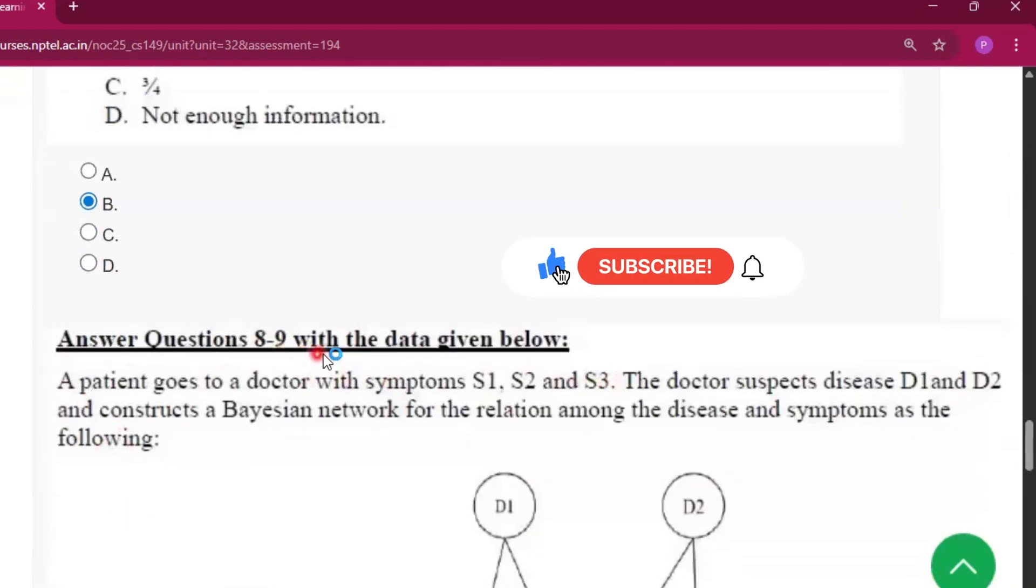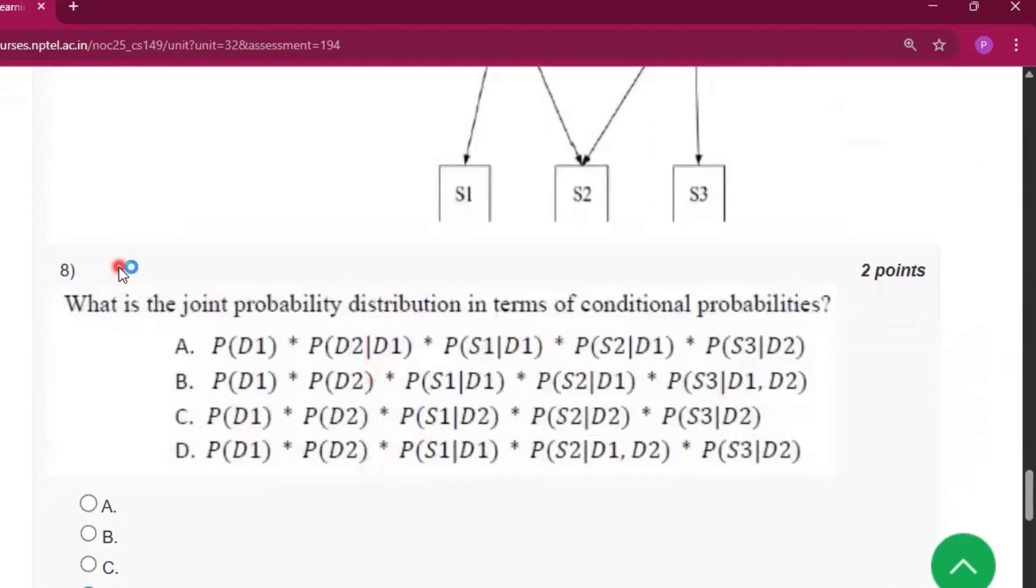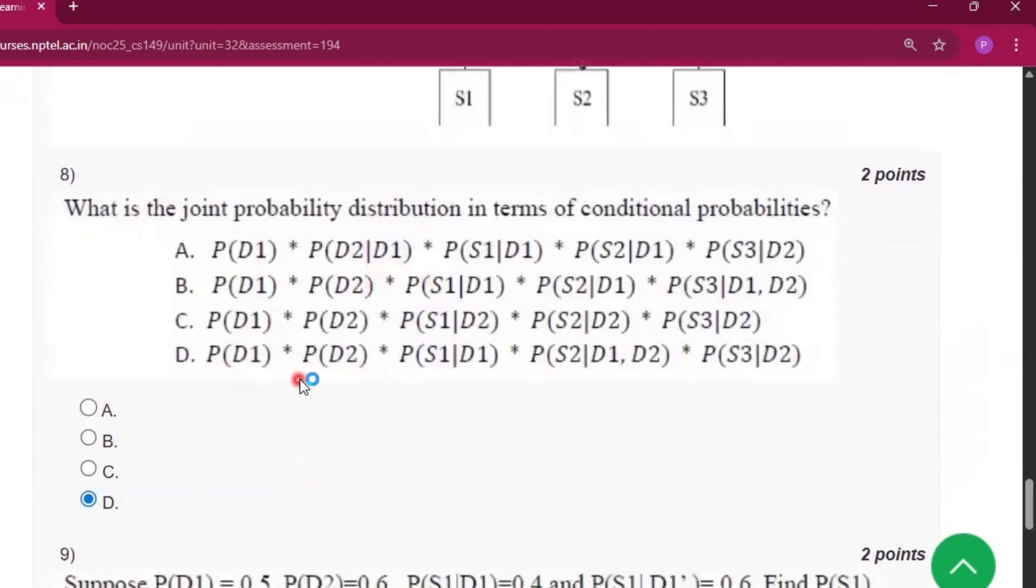Now answer the questions from 8 to 9 with the data given below. So the answer of 8 will be option D, that is P(D1) into P(D2) into P(S1|D1) into P(S2|D1, D2) into P(S3|D2).